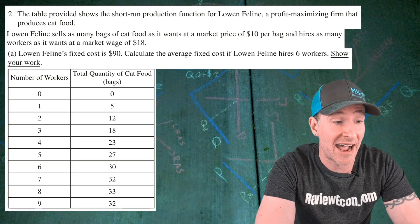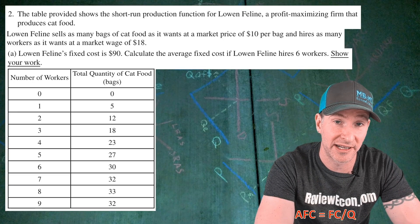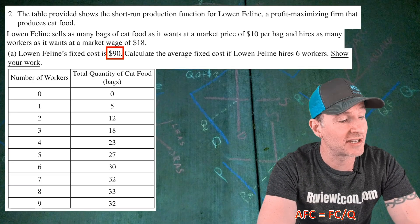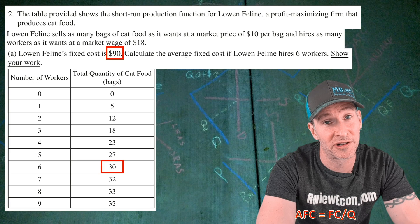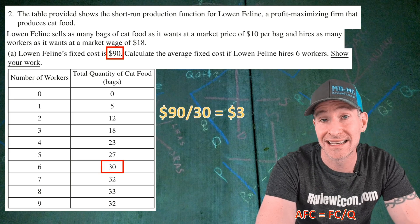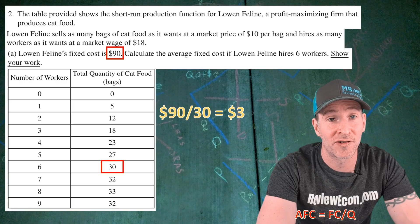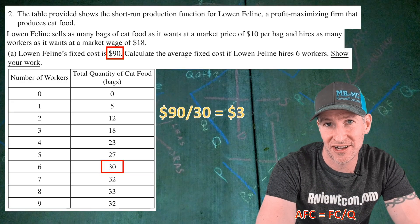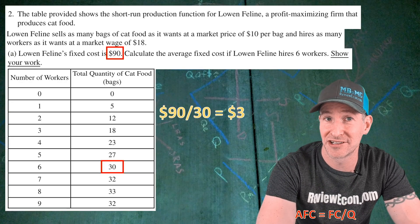Remember, the formula for average fixed cost is the fixed cost divided by the quantity. Our fixed cost is $90, and while hiring six workers our quantity produced is 30. Plug in those numbers and do the math: $90 of fixed cost divided by 30 units of quantity equals $3 of average fixed cost. Simply show that math and you get your first point.